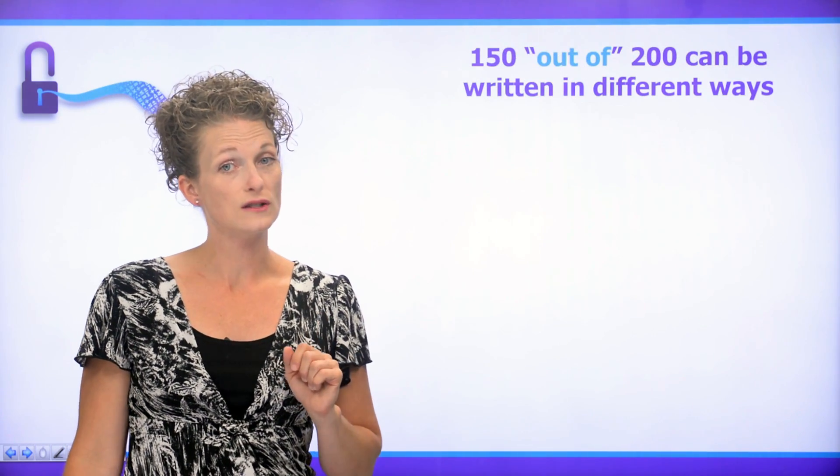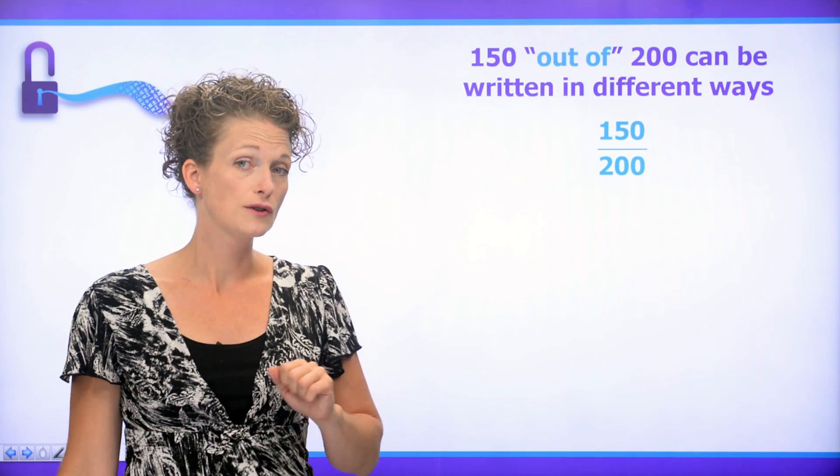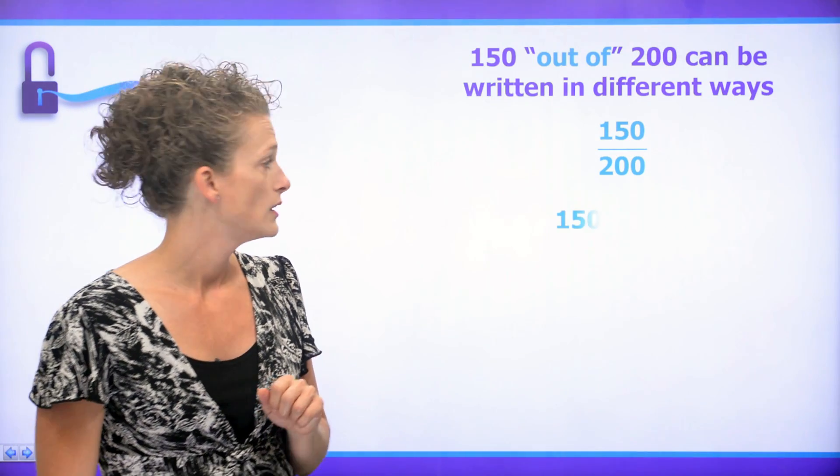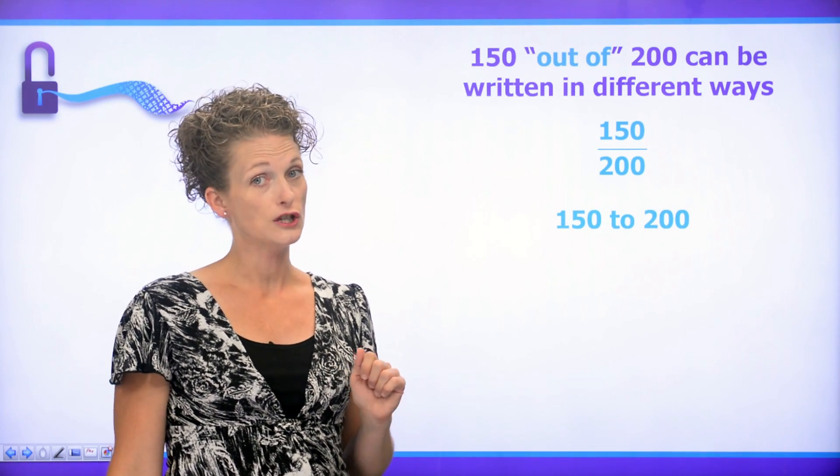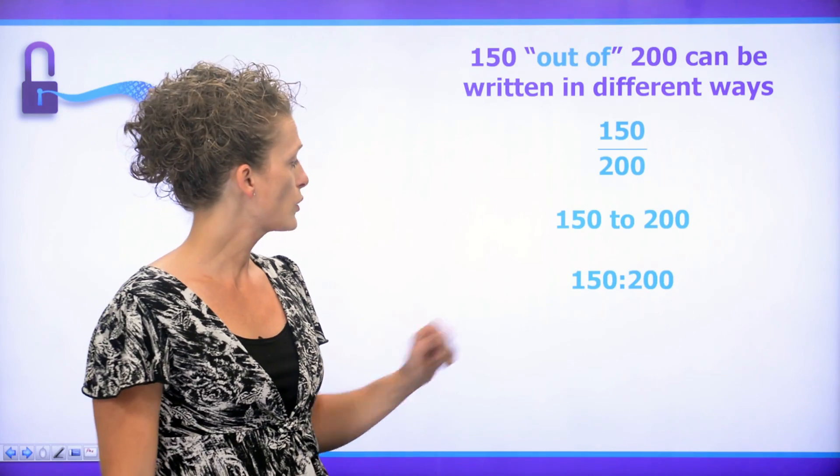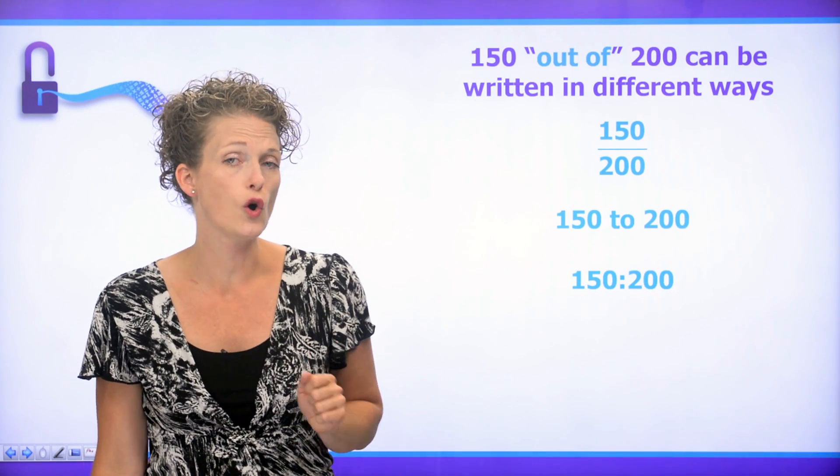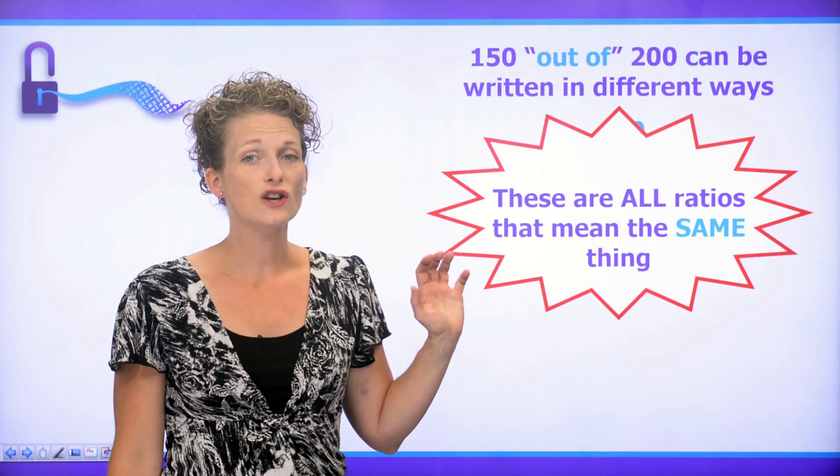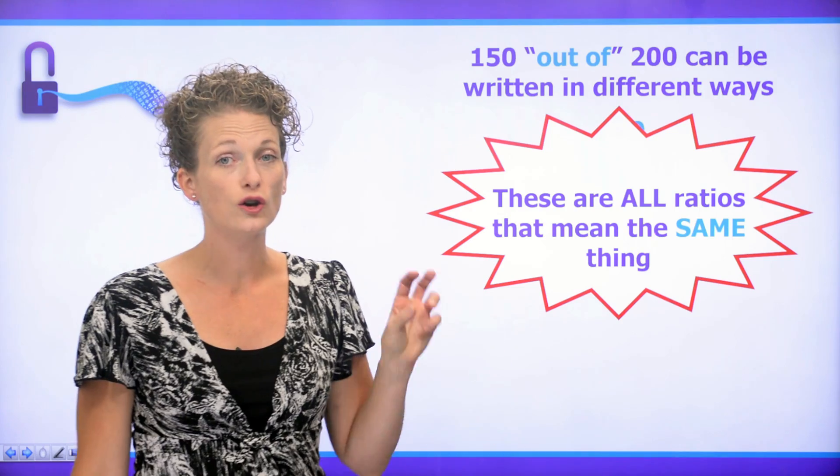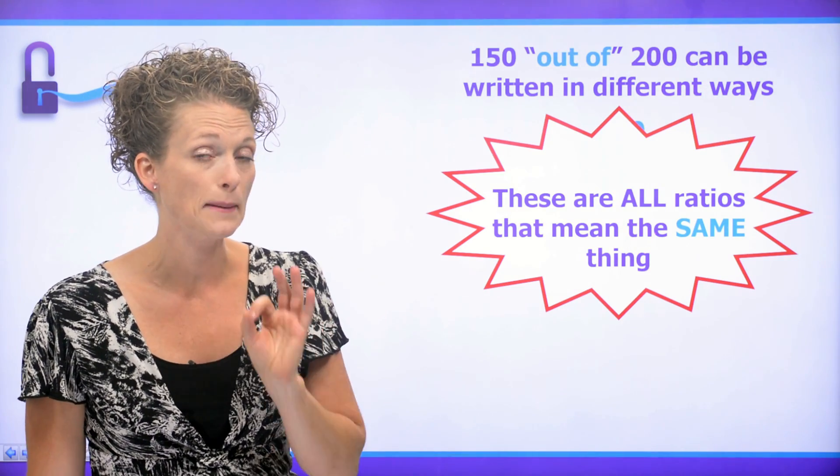Well, there are different ways in which we can do that. We can write it as 150 over 200. We can write it as 150 to 200. Or we could also write it as 150 colon 200. These are all ratios that are equivalent. They mean the same thing.